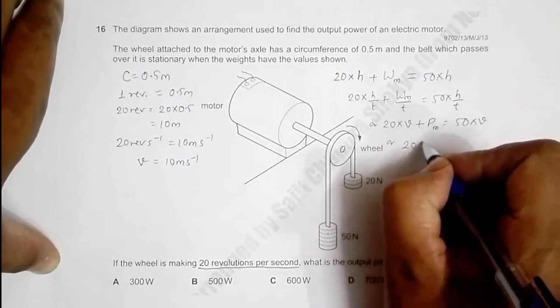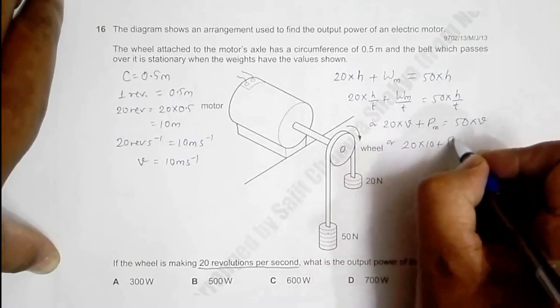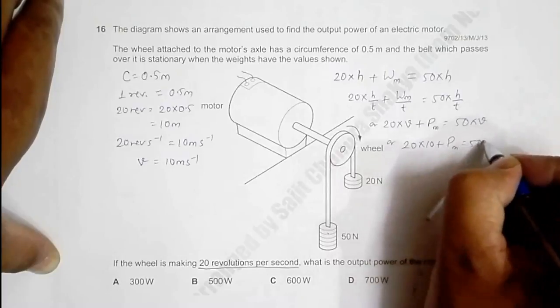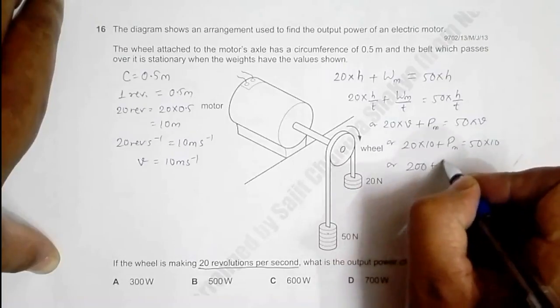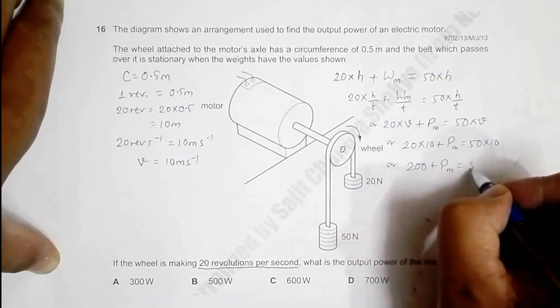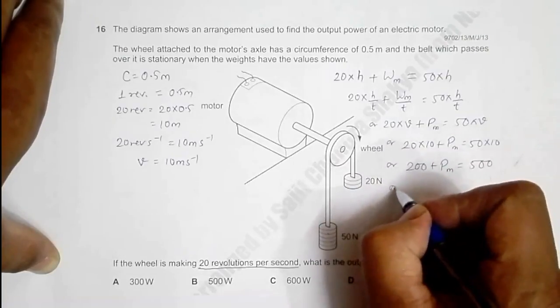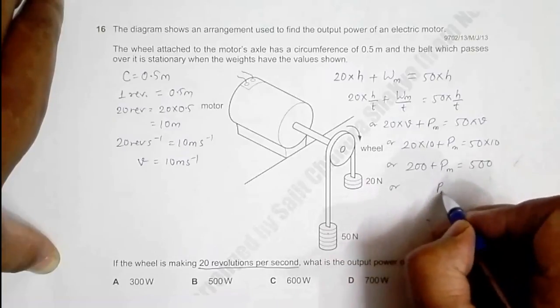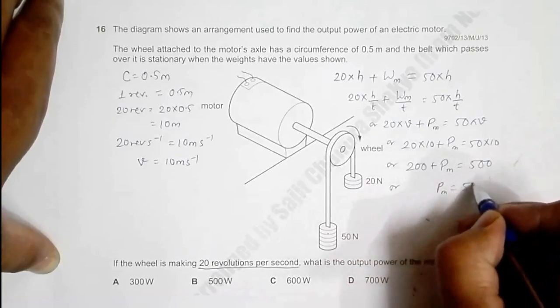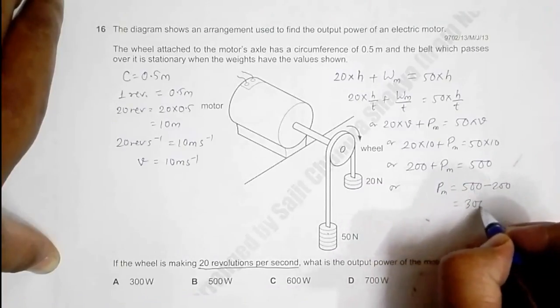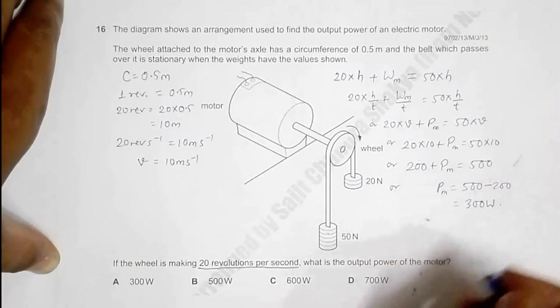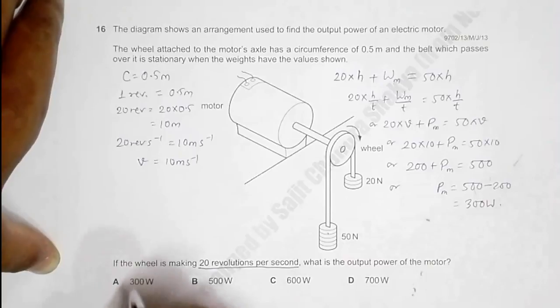This gives us 20 × 10 + power of motor = 50 × 10, which gives us 200 + P_m = 500. That gives us P_m = 500 - 200 = 300 watts. So the answer choice which resembles this is choice A. Choice A should be the correct answer.